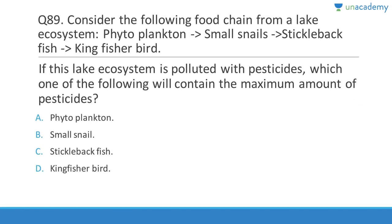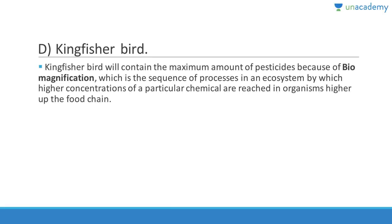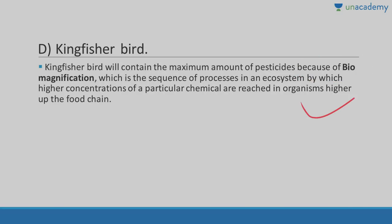Question 89: In a lake ecosystem food chain — phytoplankton → small snails → stickleback fish → kingfisher bird — if volatile pesticides enter the lake, the kingfisher bird will contain the maximum amount due to biomagnification. The concentration of pesticides increases higher up the food chain. This also causes brittle eggs due to disrupted calcium formation, leading to chick deaths.